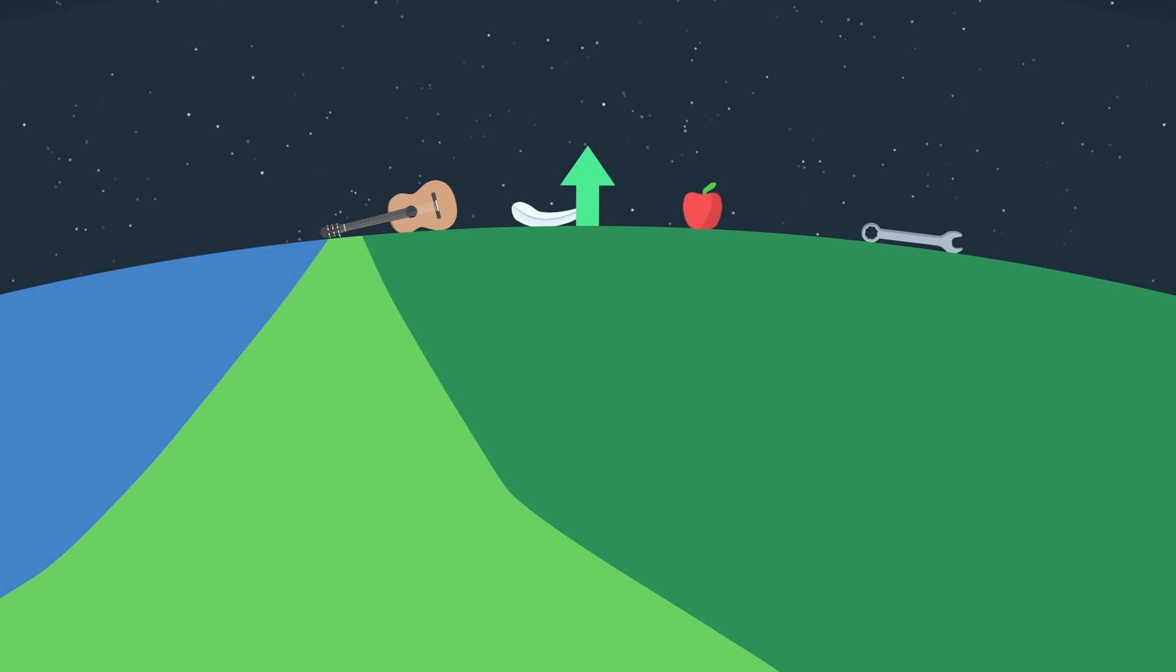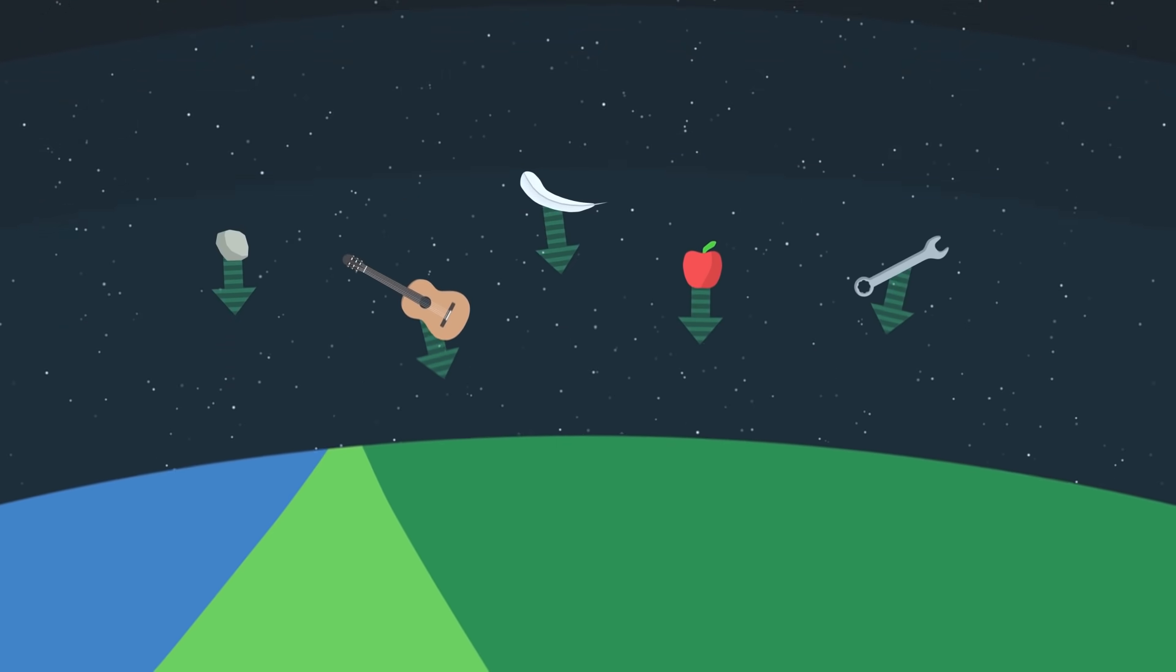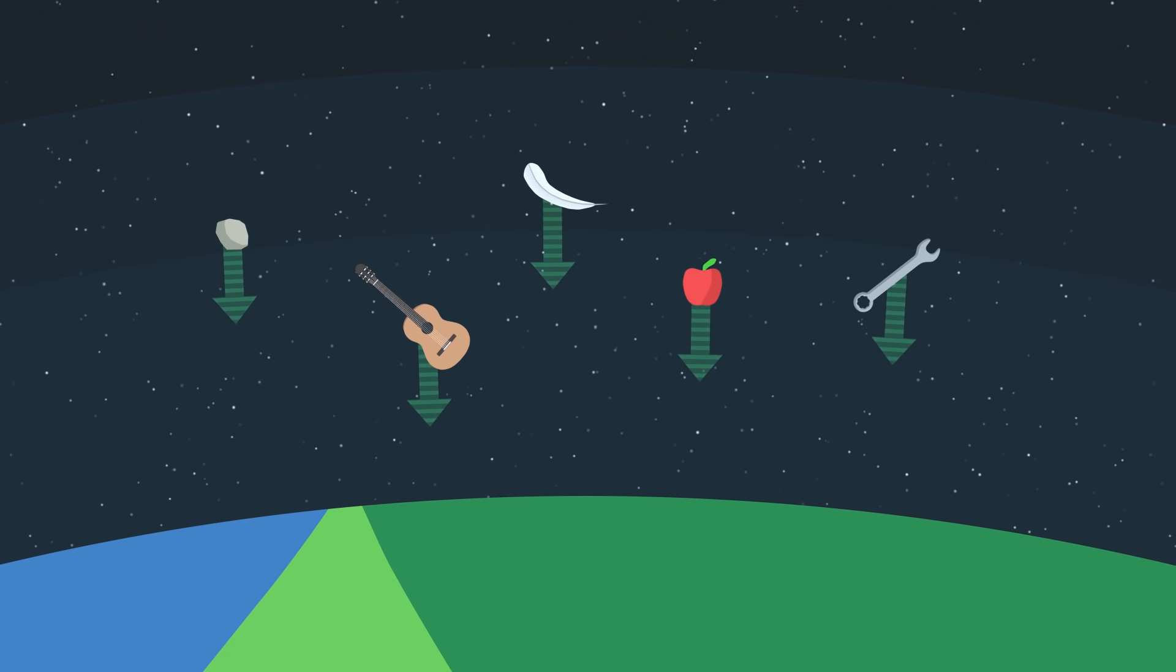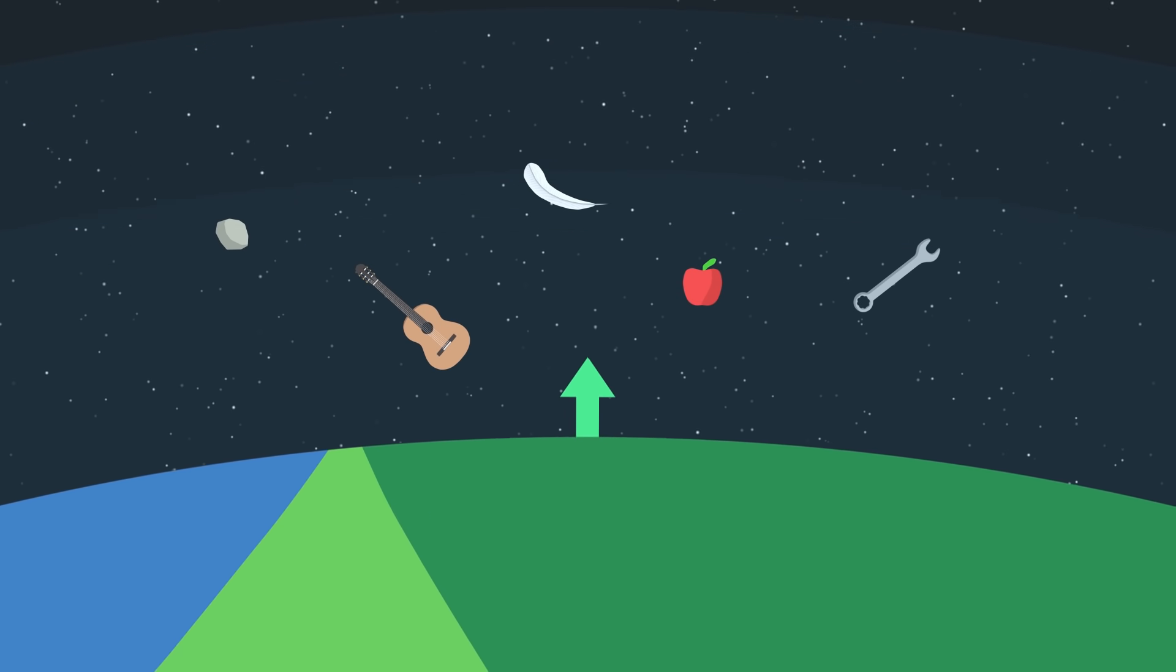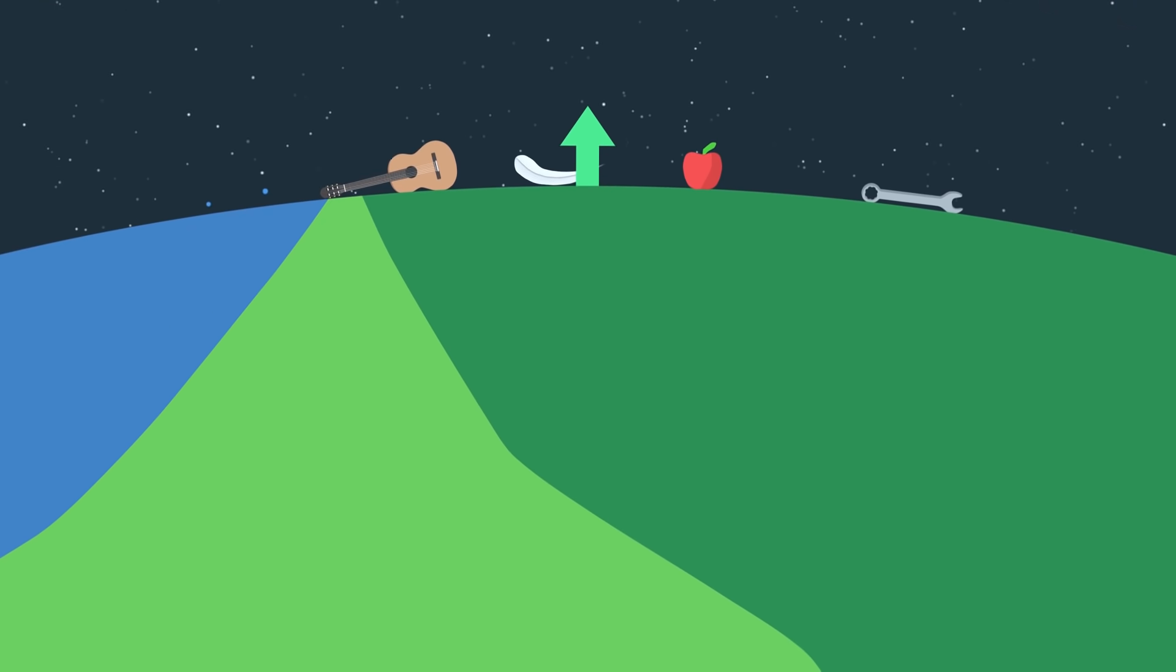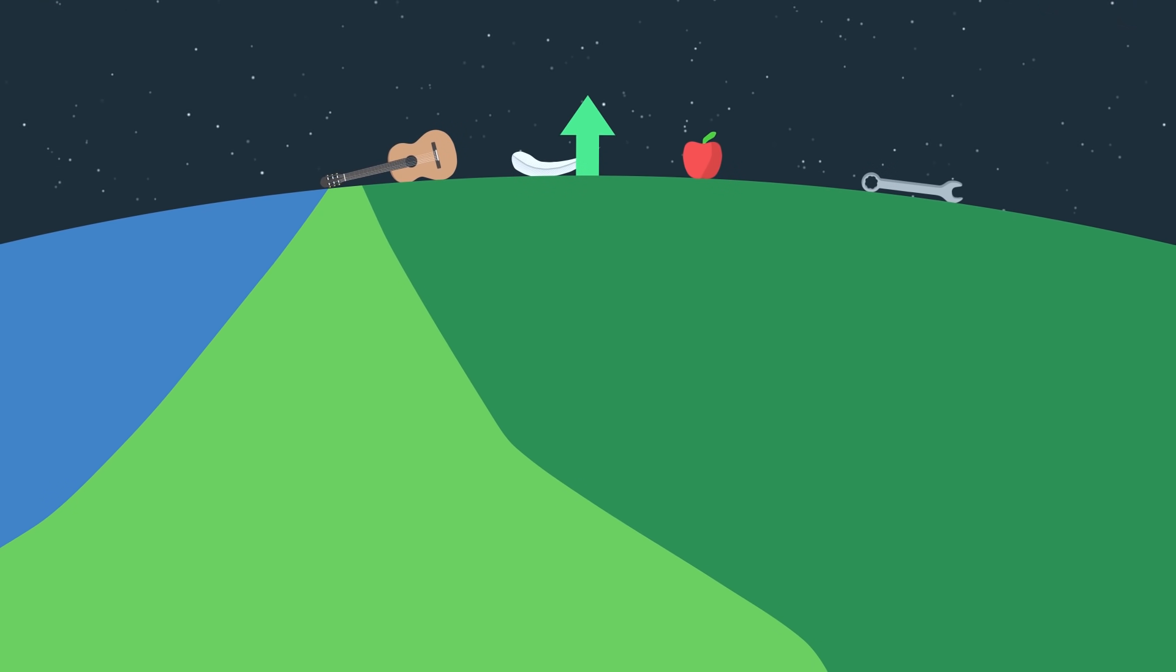At first, this vision seems more elegant. Instead of inventing a mysterious force, gravity, it suffices to say that it is the ground that rises. Objects seem to come closer to the ground, not because they fall, but because the surface accelerates upwards.